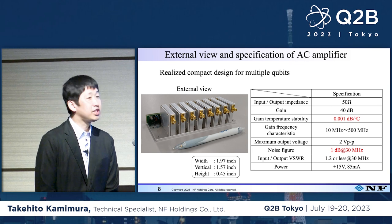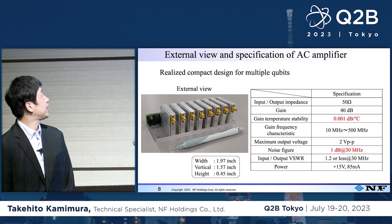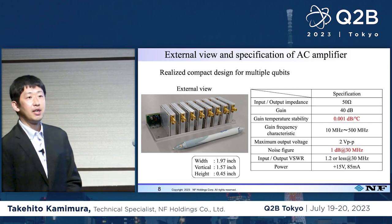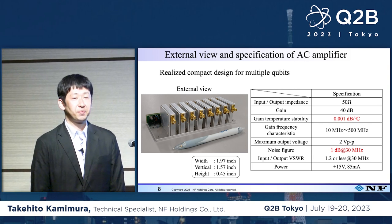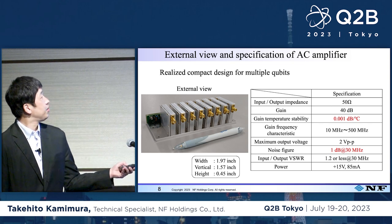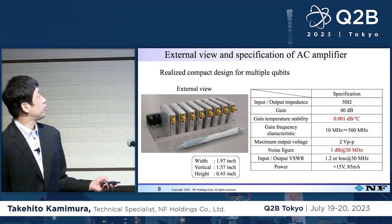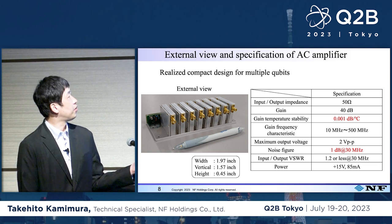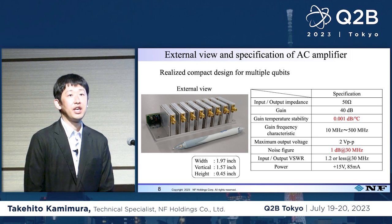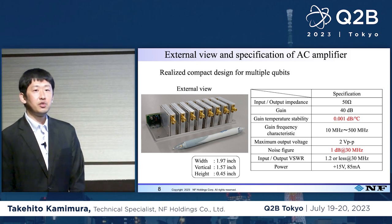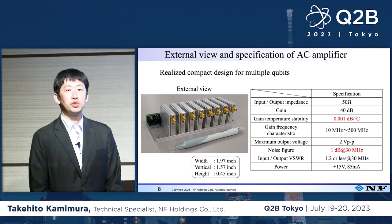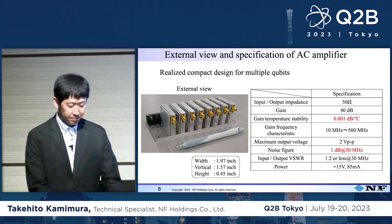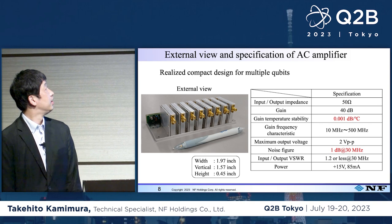This is our amp. On the left-hand side is the external view. We designed it in a compact design so that we can handle multiple qubits. It's very small. On the right-hand side, we have the specification. As mentioned, it is low noise and highly stable. Therefore, under room temperature, after down conversion, you can use it to amplify the signals.